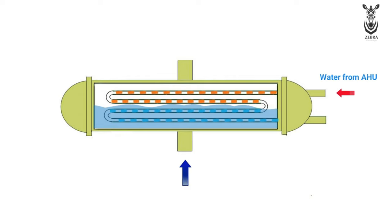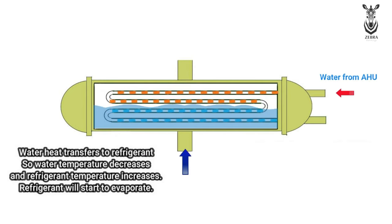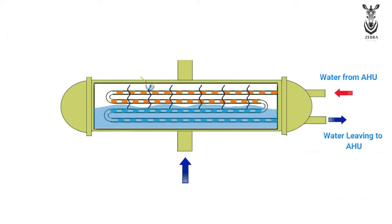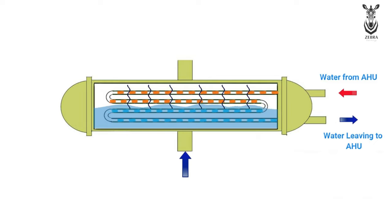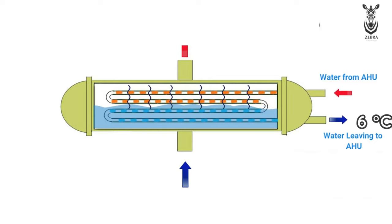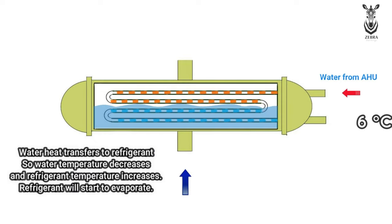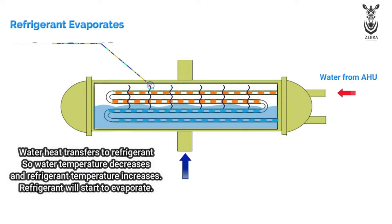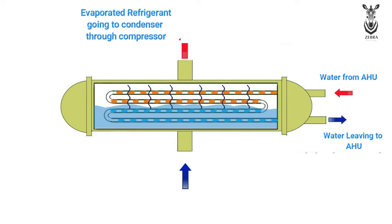According to the law of thermodynamics, the heat of the water will transfer to the refrigerant, because the water temperature is higher than the refrigerant. As the heat of the water goes to the refrigerant, the water cools down and comes out of the evaporator at 6 degrees Celsius and goes to the AHU. As the temperature of the refrigerant increases, the refrigerant evaporates and goes to the condenser through the compressor. This process is continuous.